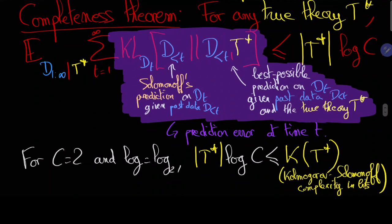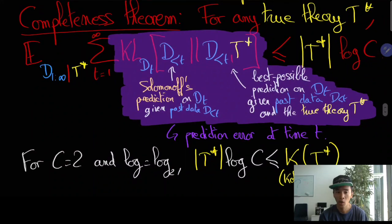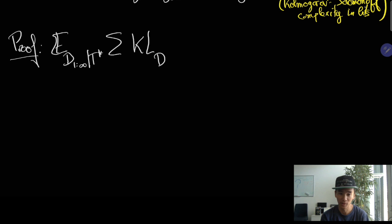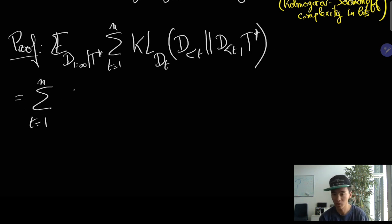So let's give the proof of this theorem. The proof is as follows: we consider the sum of all expected errors of Solomonoff's demon.